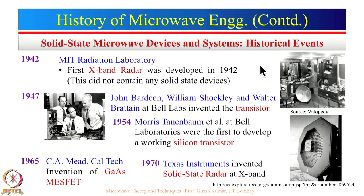In 1942, MIT Radiation Laboratory first demonstrated X-band radar, but it did not contain any solid state devices. It was in 1947 when Bell Labs invented the first transistor, and in 1954 Bell Labs developed the working silicon transistor. Microwave gallium arsenide MESFETs were developed in 1965, and in 1970 the first solid-state radar was demonstrated at X-band.